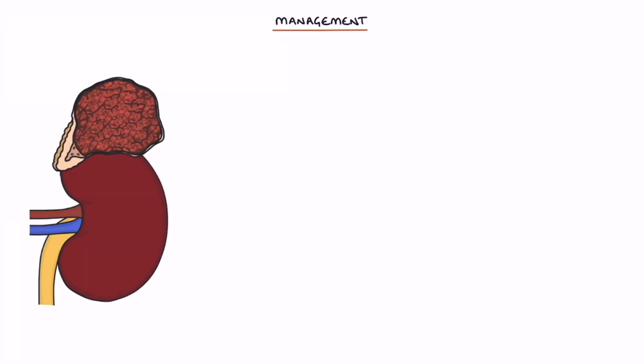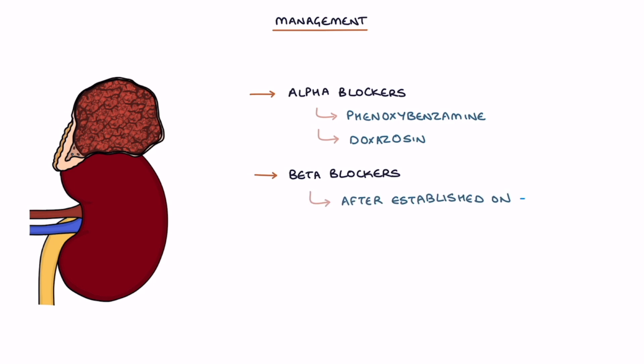Finally let's talk about management. Management of a pheochromocytoma involves alpha blockers, for example phenoxybenzamine or doxazosin, beta blockers which are started only after the patient is established on alpha blockers, and surgical removal of the tumour.